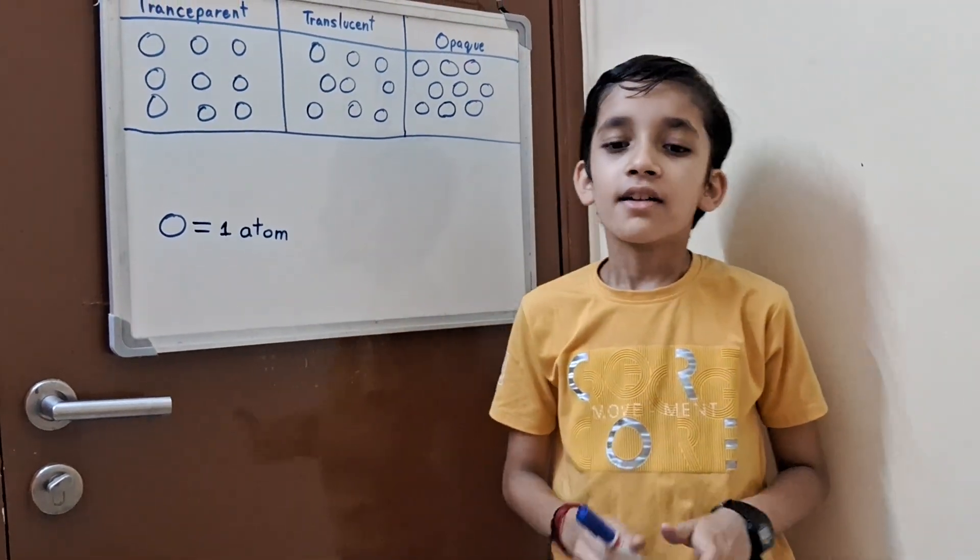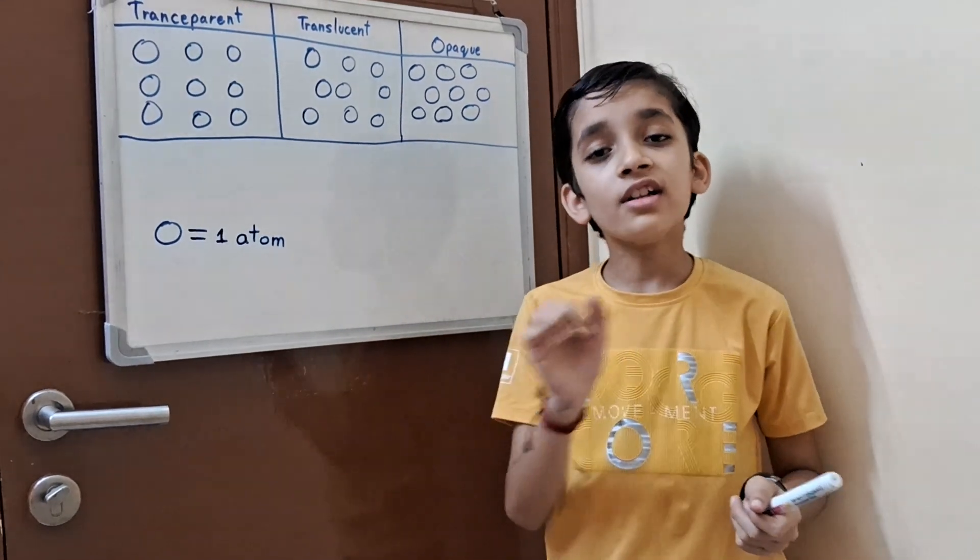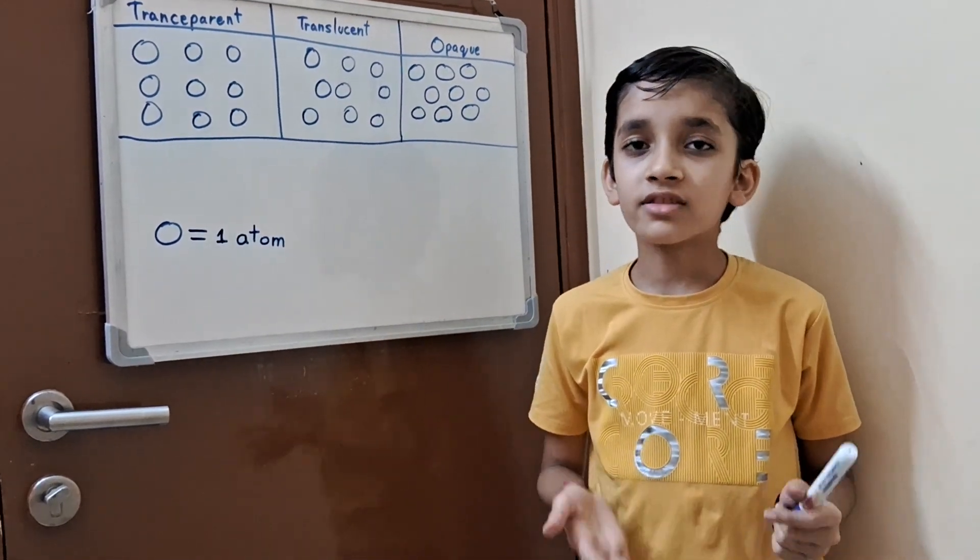Transparent is like we can clearly see through that and we can see all the objects through that, all the colors, all the objects.